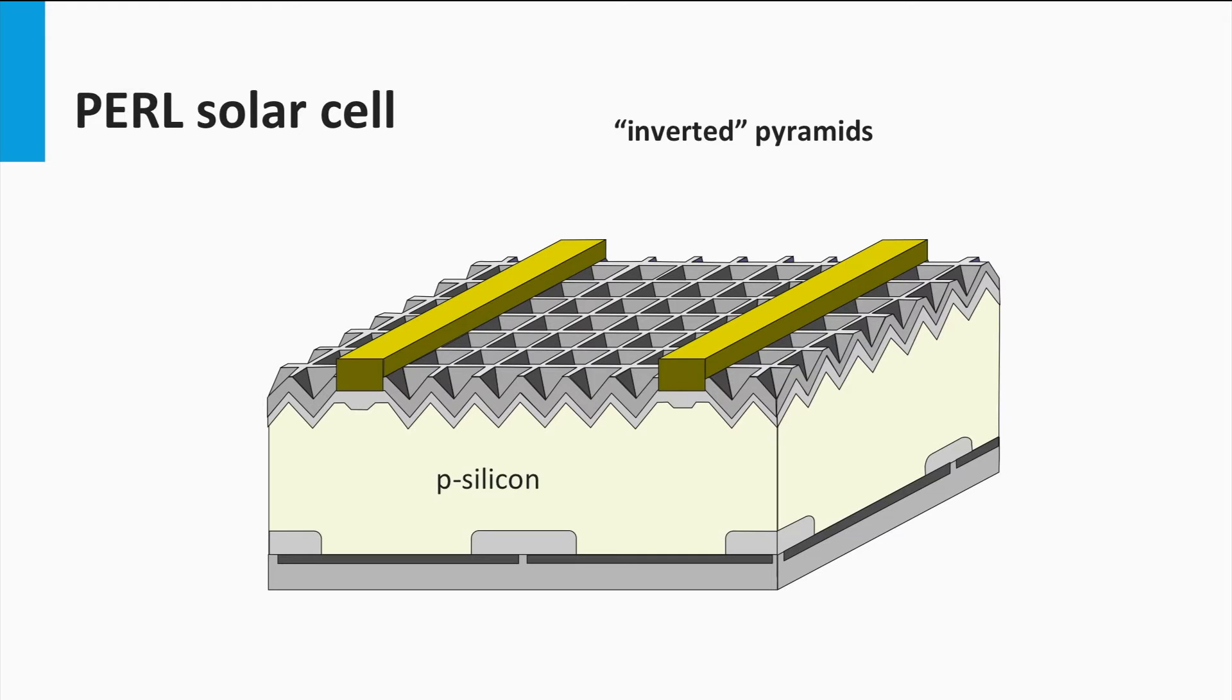Thirdly, the contact area at the front side has to be as small as possible to reduce the shading losses. In the PEARL concept, these very thin and fine metal fingers are processed using photolithography technology.